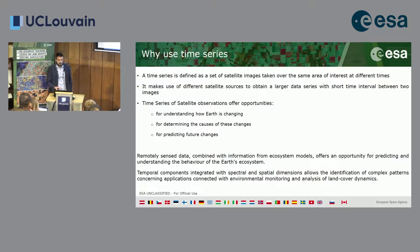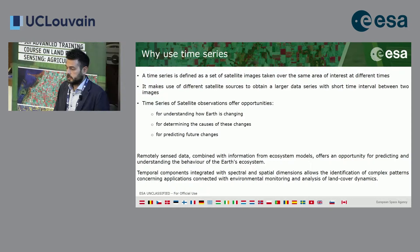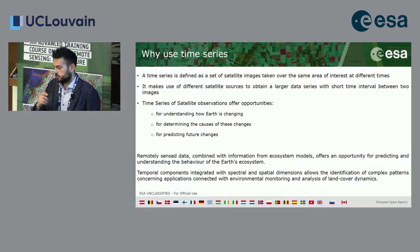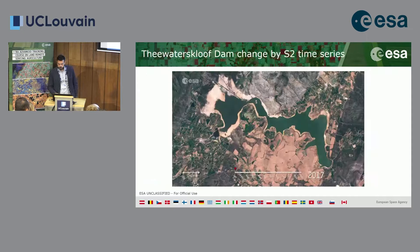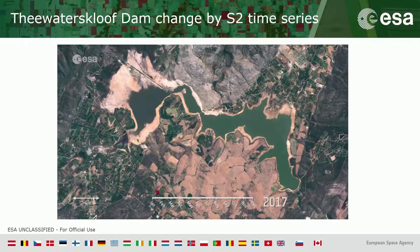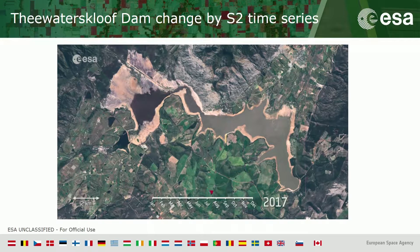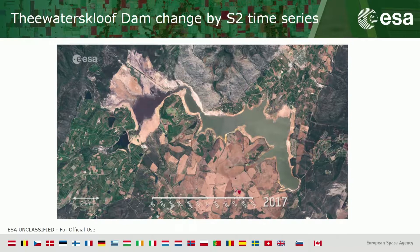A time series is a set of satellite images taken over the same area at different times, potentially from different satellites. The objective is to understand how the Earth is changing, determine the causes of those changes, and predict the future. An example is the Theewaterskloof dam in South Africa, showing a dramatic water level change from January 2017 to January 2018, visualized from the Sentinel Hub time series.